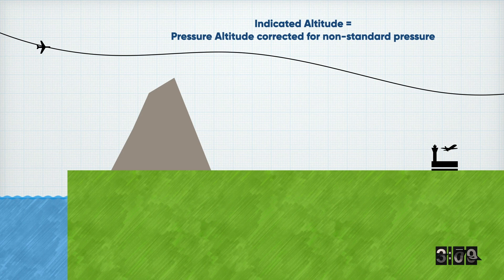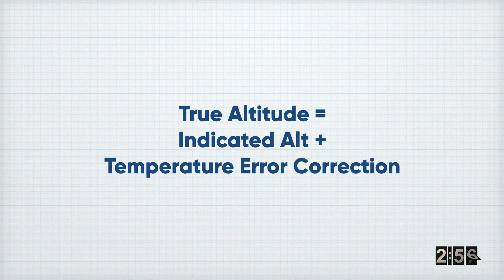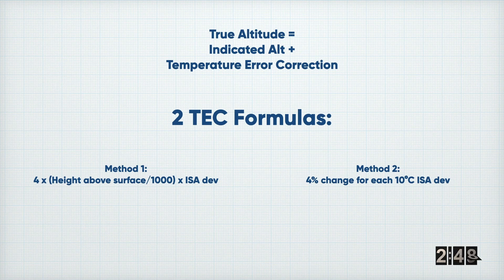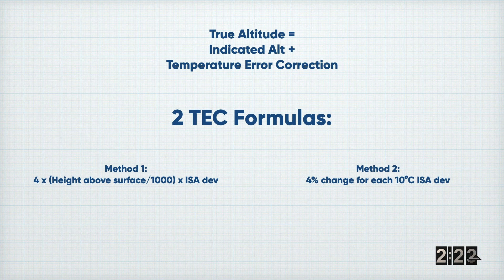True altitude takes our indicated altitude and makes an adjustment for non-standard temperatures. There are two methods for temperature error correction. The first one, which I tend to prefer because it seems slightly more accurate, is to take our height above the surface, divide it by a thousand, multiply it by four, and then multiply it by our ISA deviation. The second method is the 4% rule: for every 10 degrees of ISA deviation, we add or subtract 4% of our indicated altitude, depending on whether we're hotter or colder than ISA.